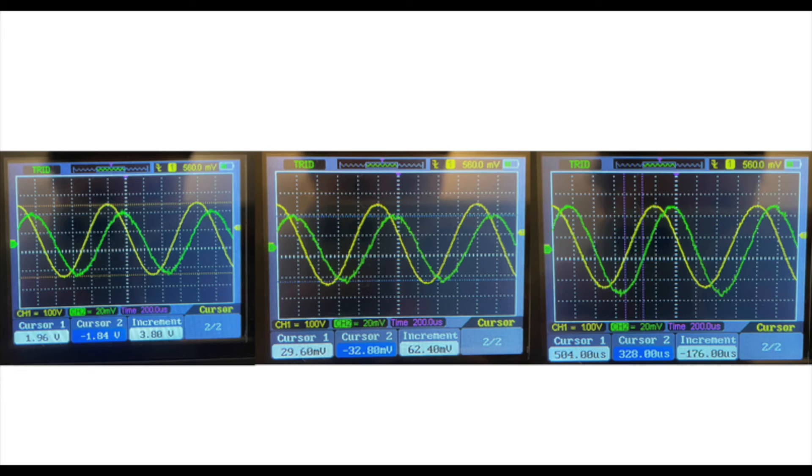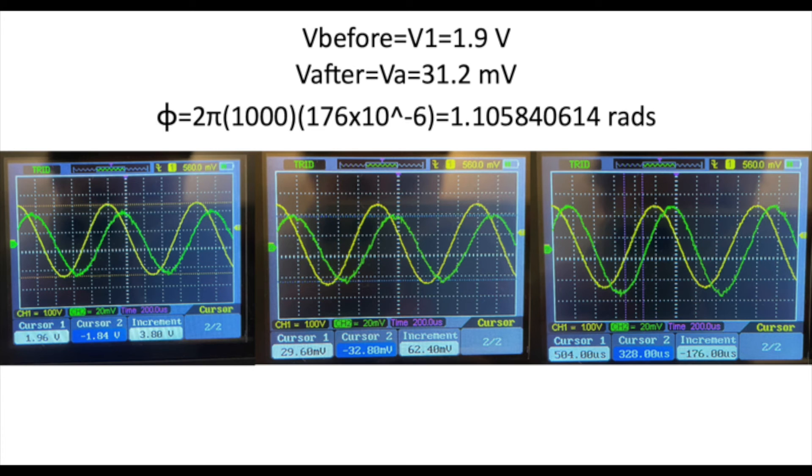With the Hantek, I was able to obtain the following signals, so that I could measure the voltage before the load network, the voltage after the load network, and the time difference between the two voltages. This gave me a power factor of roughly 0.435.